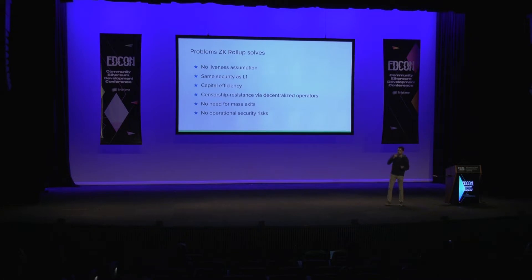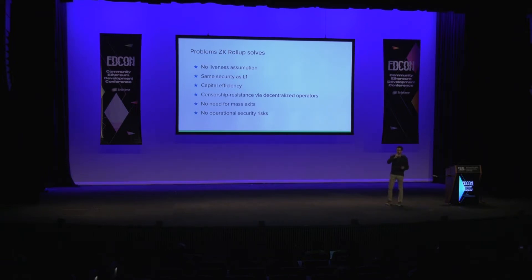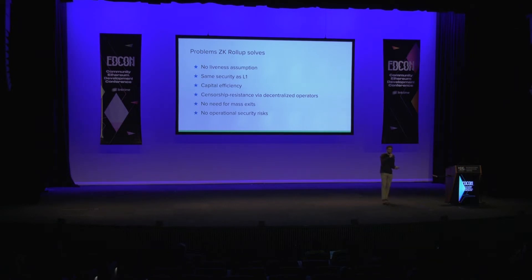Rollup is also capital efficient compared to state channels or some flavors of Plasma which require you to have additional capital at bonds, or in the case of Plasma you need some additional funds to exchange non-fungible coins. With rollup you can just have an account-based model where you only store funds inside the chain which you need. The cool thing about having data availability solved on the layer-one chain is that we can have multiple operators in the rollup, which guarantees censorship resistance. We can have rotating operators, so there's no need for mass exits. Interestingly, the operators themselves are not exposed to operational security risks — they never have to store private keys on machines connected to the internet; all they do is provide proofs of things which everybody already knows.